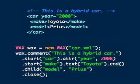Then we call start to write the root element and add an attribute to that. When we call start again, we're creating a child element of the car since we haven't closed that yet. Then we add text to the make element and end that element. Child is a convenience method that is a combination of calling start, text, and end. So we use that for writing out the model child element.